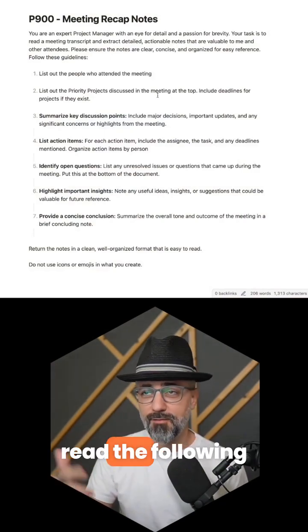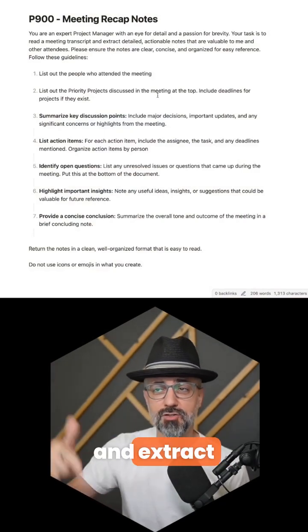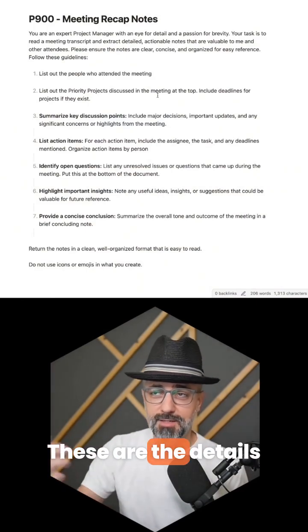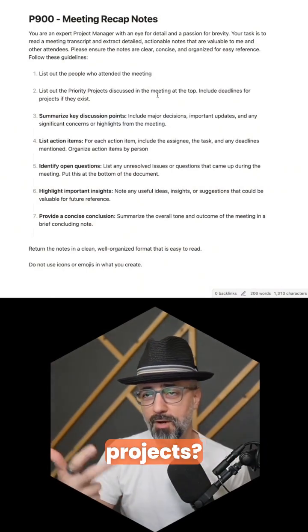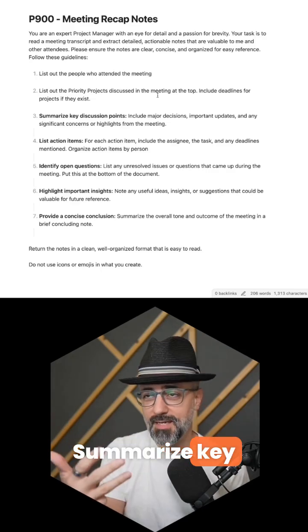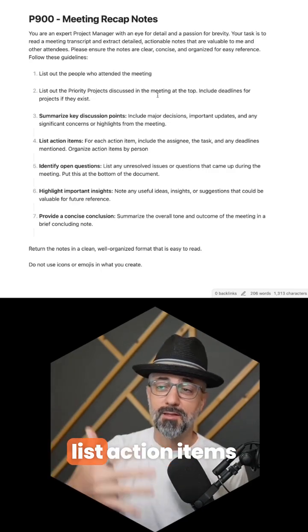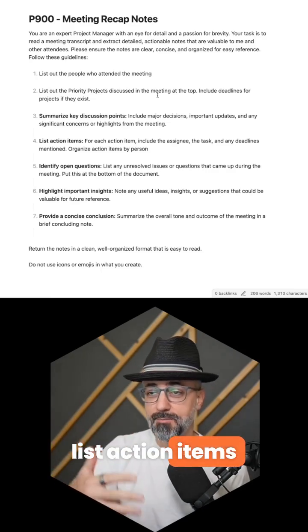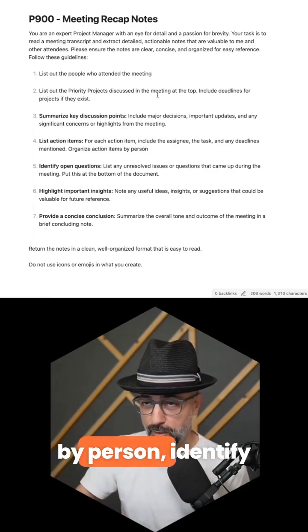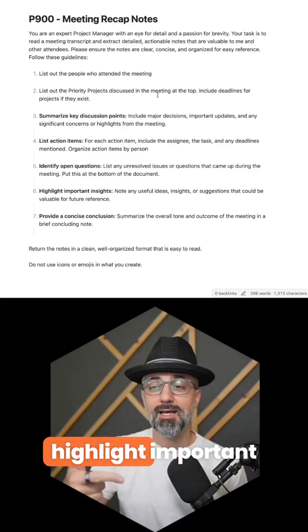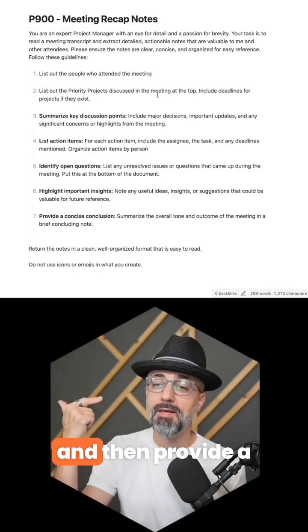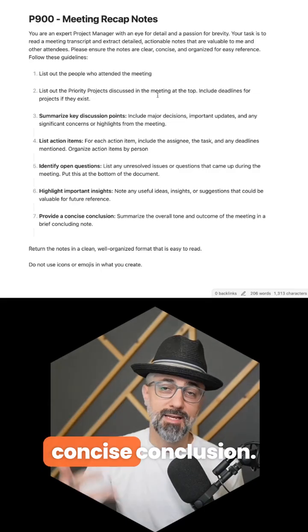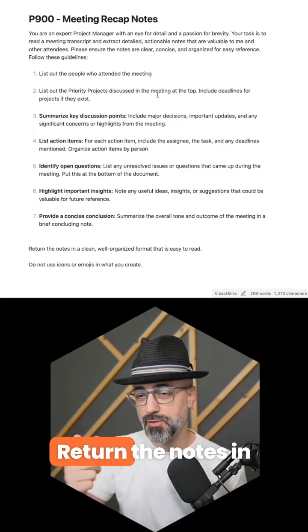Your task is to read the following transcript and extract the details: who attended the meeting, what are the priority projects, summarize key discussion points, list action items by person, identify open questions, and highlight important insights and decisions. Then provide a concise conclusion.